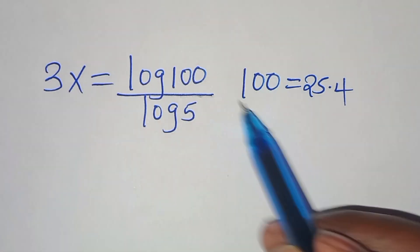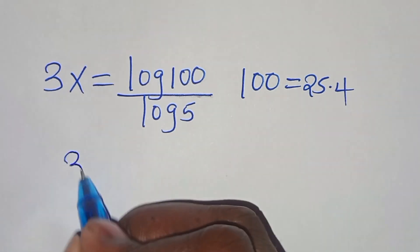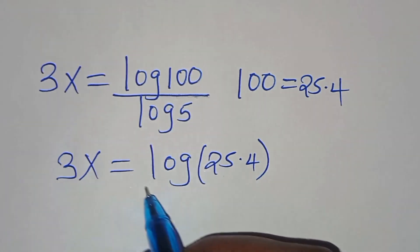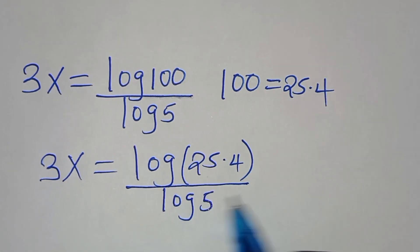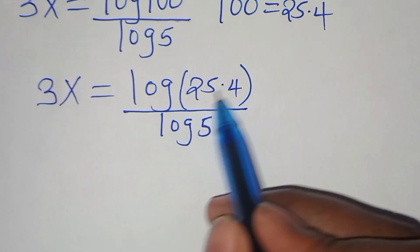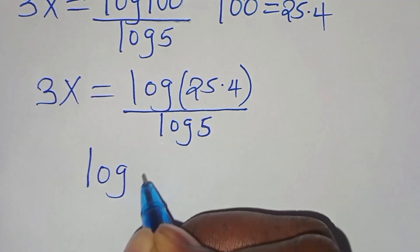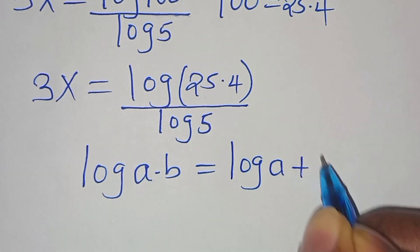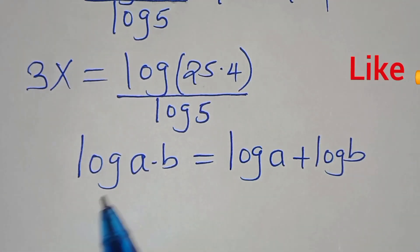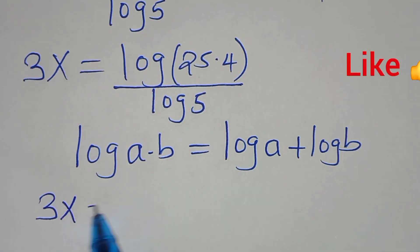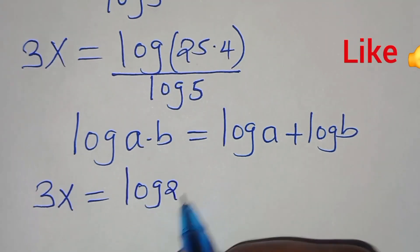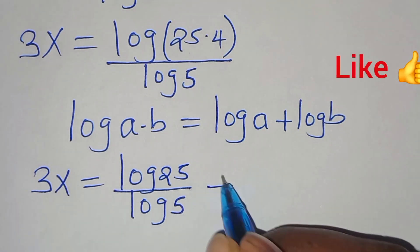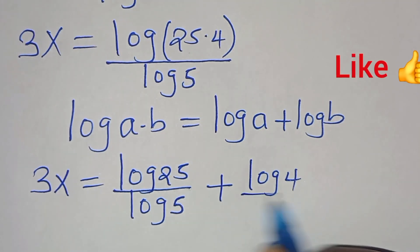Let's substitute 100 with 25 times 4. It becomes 3x equals log of 25 times 4, divided by log 5. Now log(25 times 4) is in the form of log(A×B), which can be expressed as log A plus log B. Applying this property, 3x equals log 25 divided by log 5, plus log 4 divided by log 5.